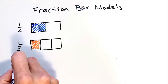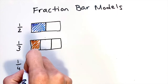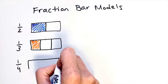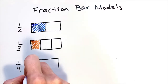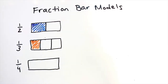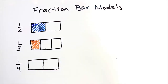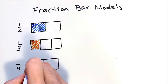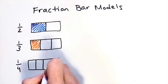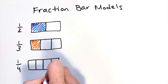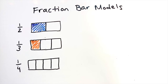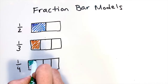Next let's draw one fourth. One fourth is actually a lot easier than one third. If you can draw one half, you can draw one fourth. You're going to start by cutting your bar in half, and then cut each half in half. There — now I have fourths. To show one fourth, I'll color in one piece of my bar model.